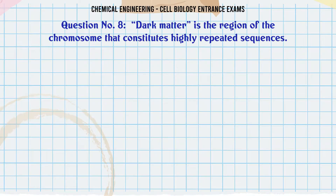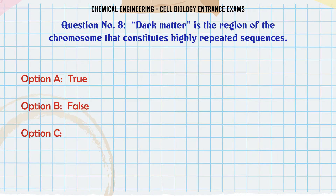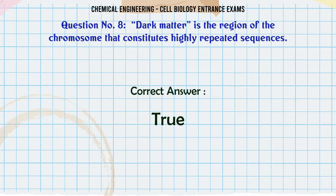Dark matter is the region of the chromosome that constitutes highly repeated sequences. A. True. B. False. The correct answer is True.